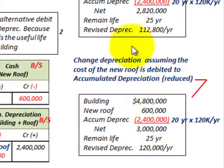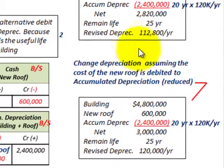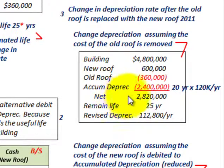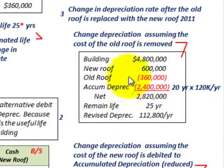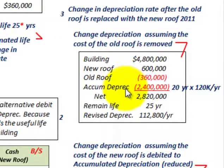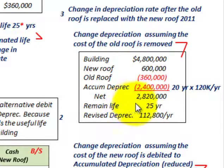That takes care of how we handle a change in estimate due to a replacement in our asset. We made a replacement, had to adjust its costs, and then made an adjustment in the remaining life on this asset — in this case, the building.